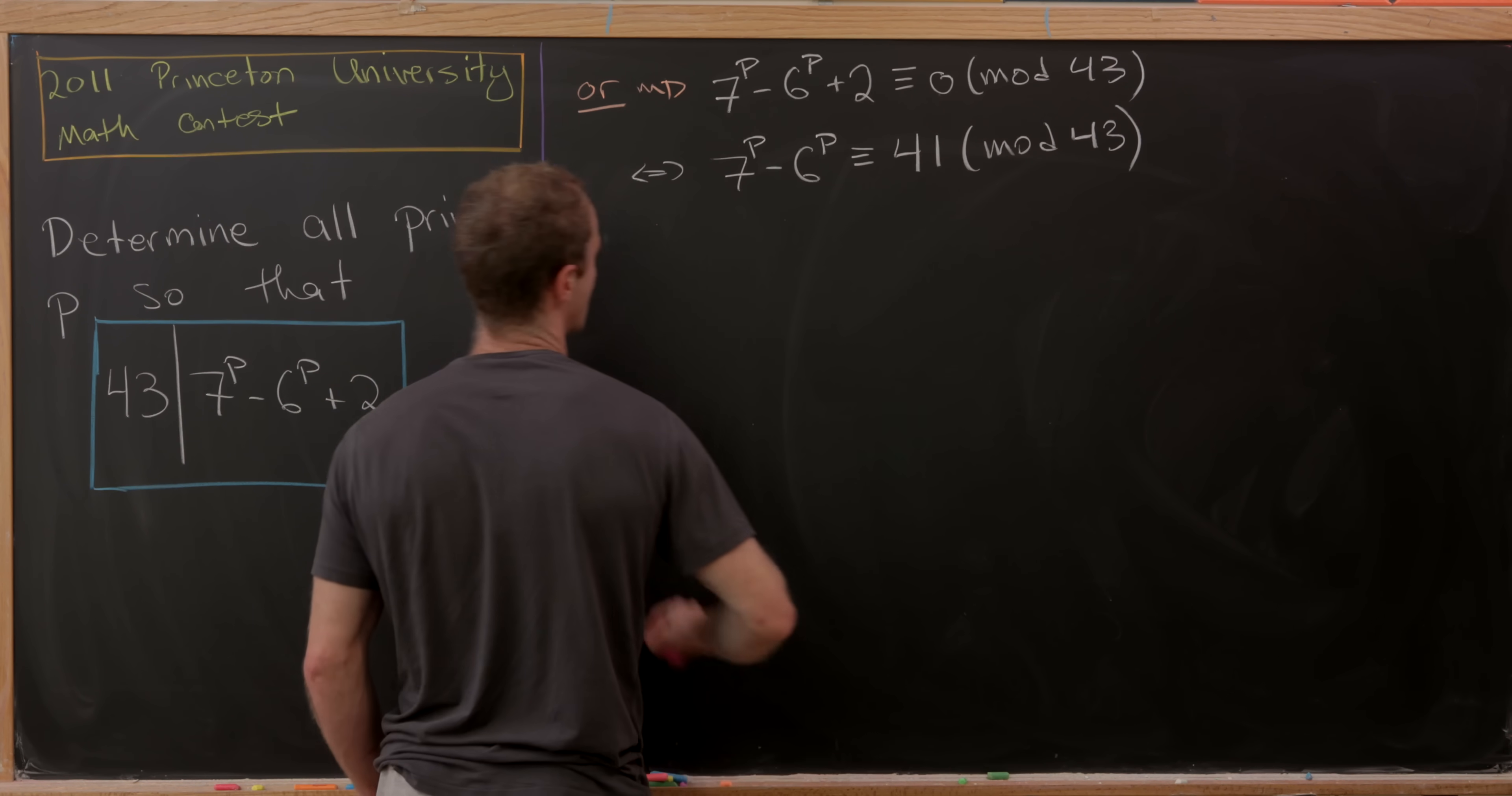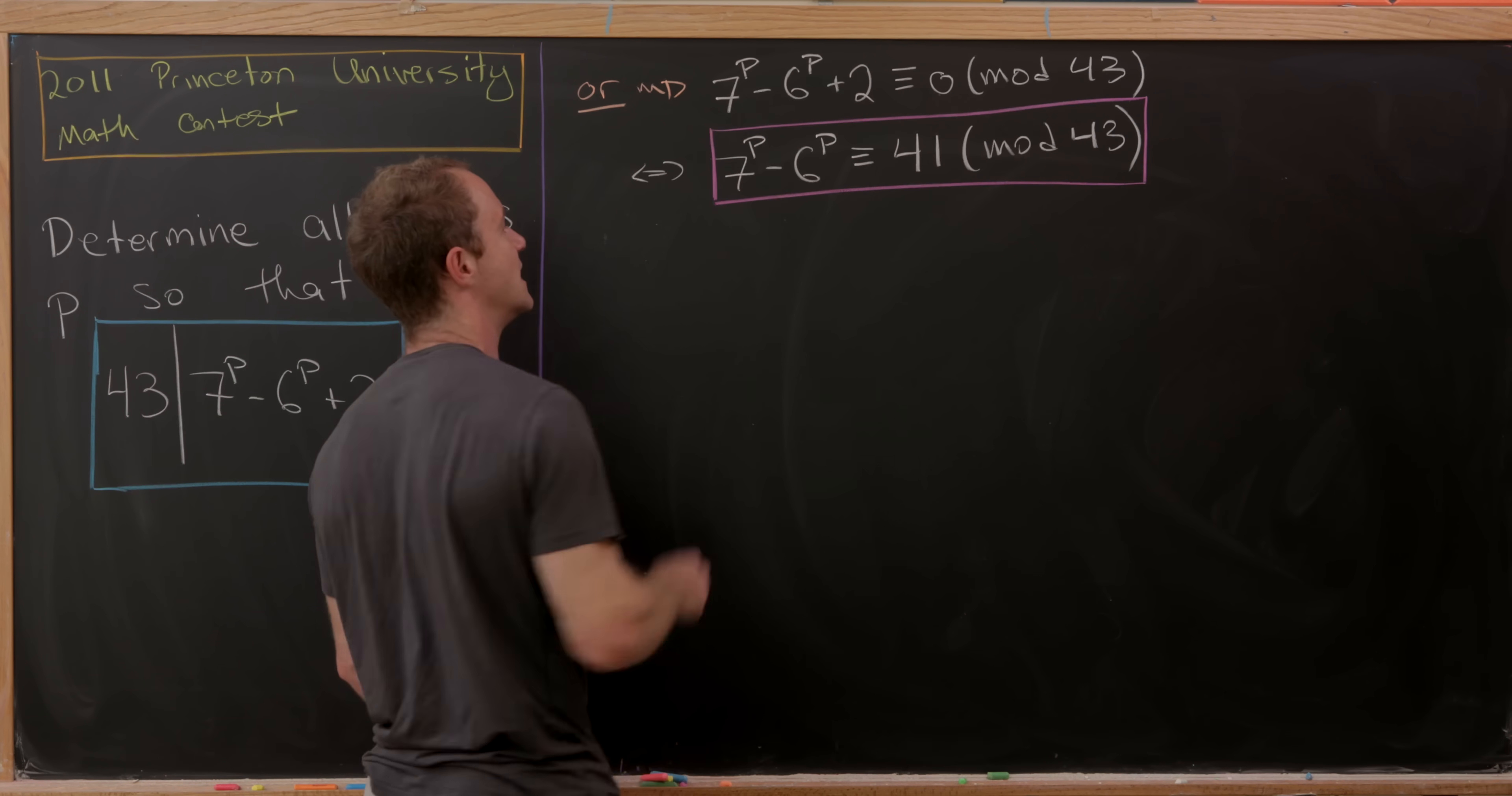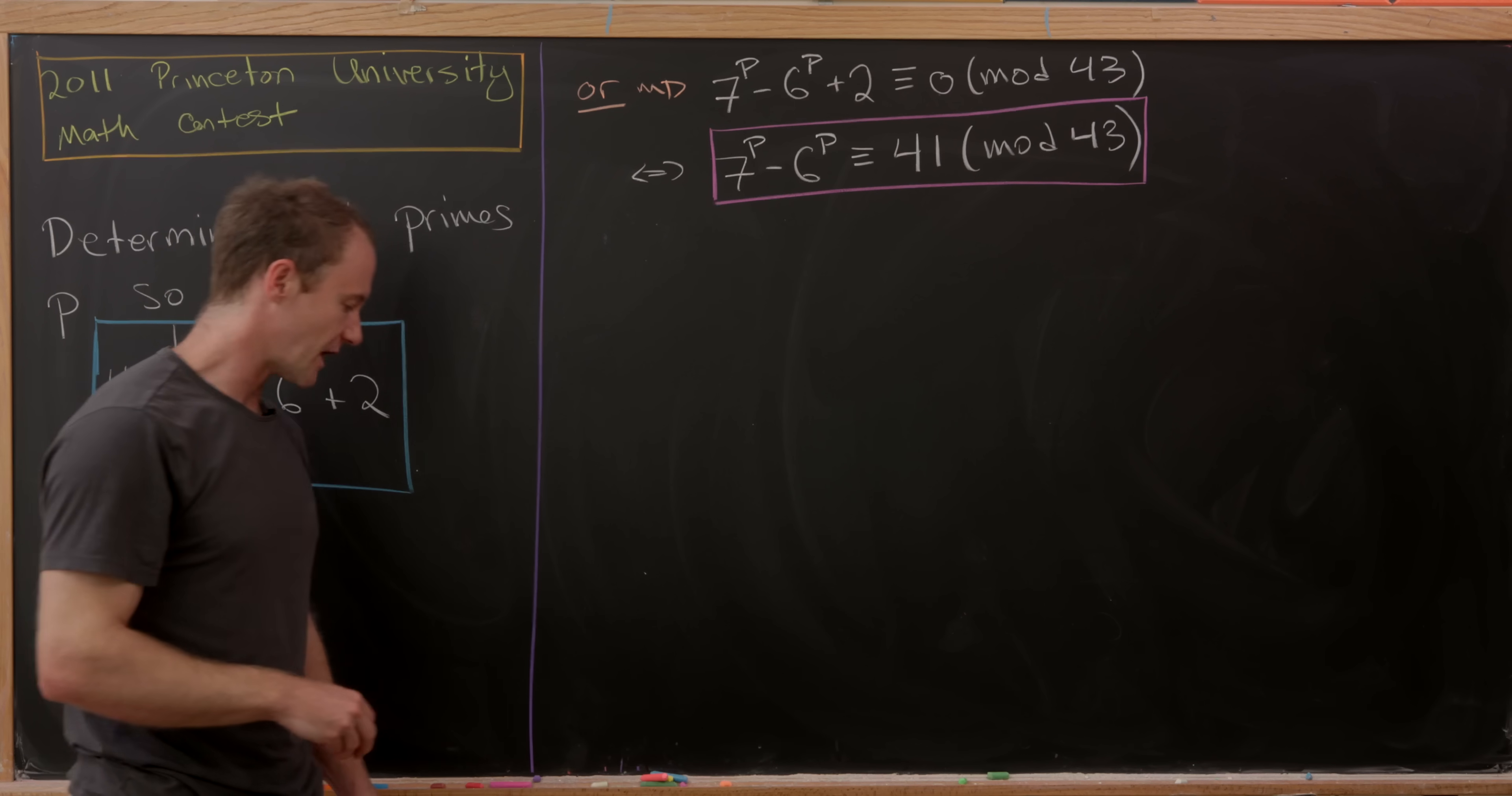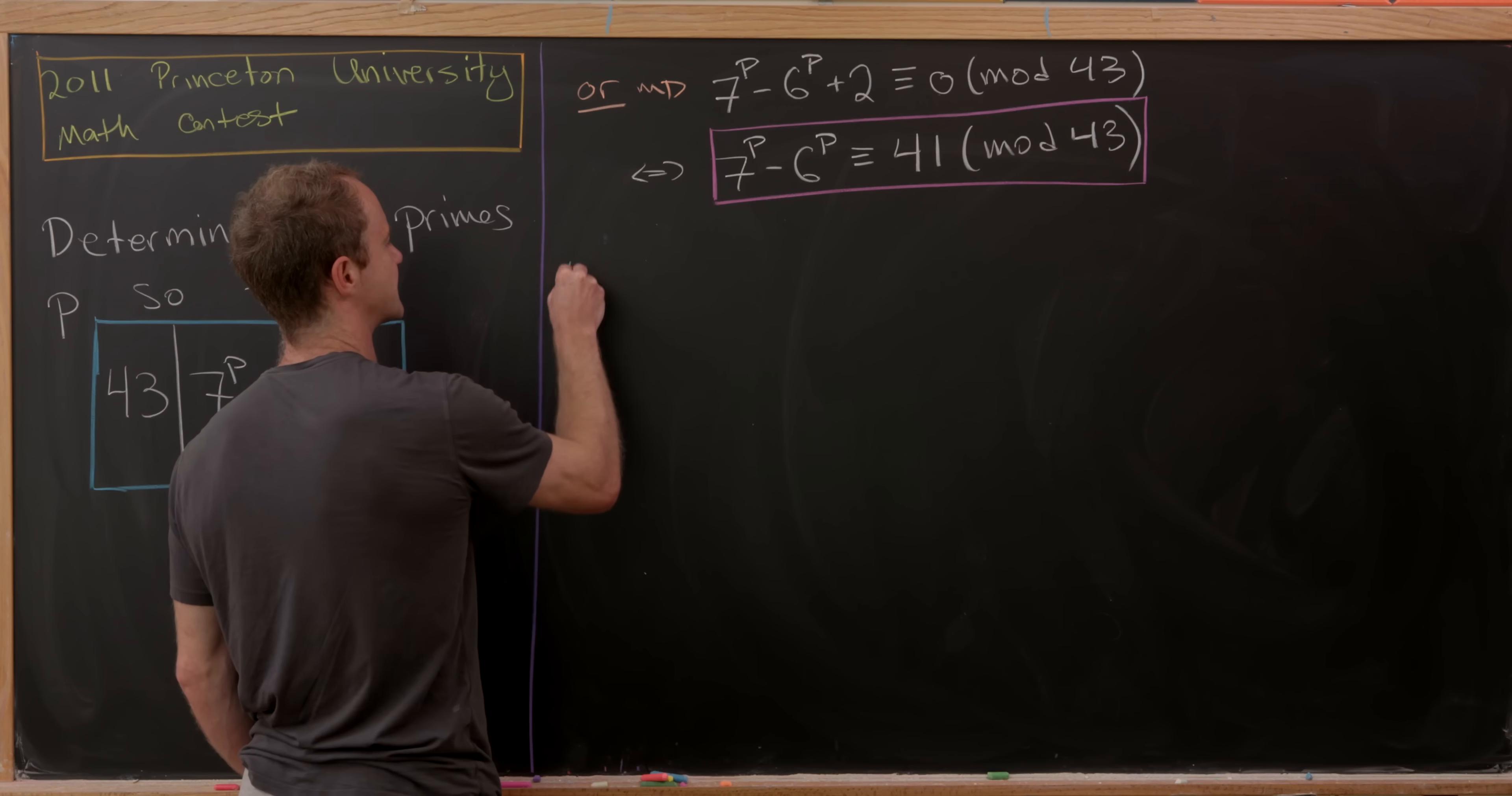Now we've rewritten the original problem as solving this exponential congruence for primes p. Next up let's recall Euler's theorem or the special case which is Fermat's little theorem.